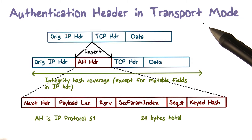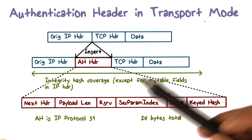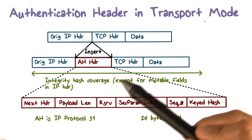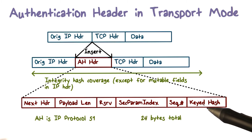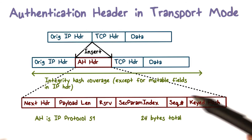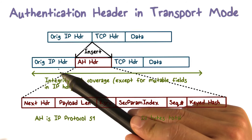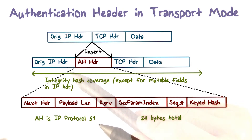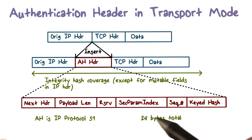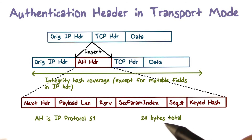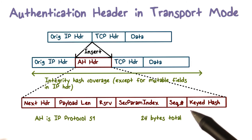If AH is used with transport mode, the authentication code is in the AH header, which is inserted after the original IP header. Other important IPsec information in the AH header includes the security parameter index and the sequence number.